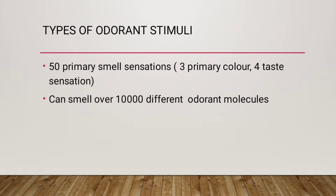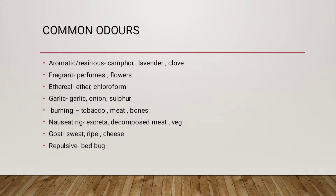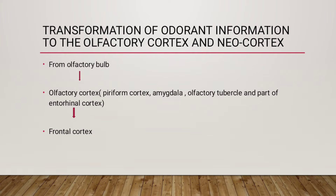There are approximately 50 primary smell sensations, and humans can smell over 10,000 different odorant molecules. Common odors include aromatic, fragrant, ethereal, garlic, burning, nauseating, and repulsive. The transformation of odorant information to the olfactory cortex and neocortex involves a pathway from the olfactory bulb to the piriform cortex, amygdala, olfactory tubercle, part of the entorhinal cortex, and then to the frontal cortex.